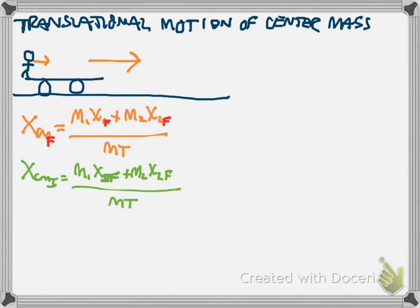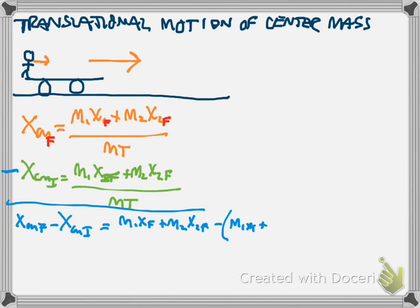And then what I'm going to do is subtract these two equations. So I'm going to take the first one minus the second one. This gives me x center of mass final minus x center of mass initial equals m1 x1 final plus m2 x2 final minus m1 x1 initial plus m2 x2 initial.